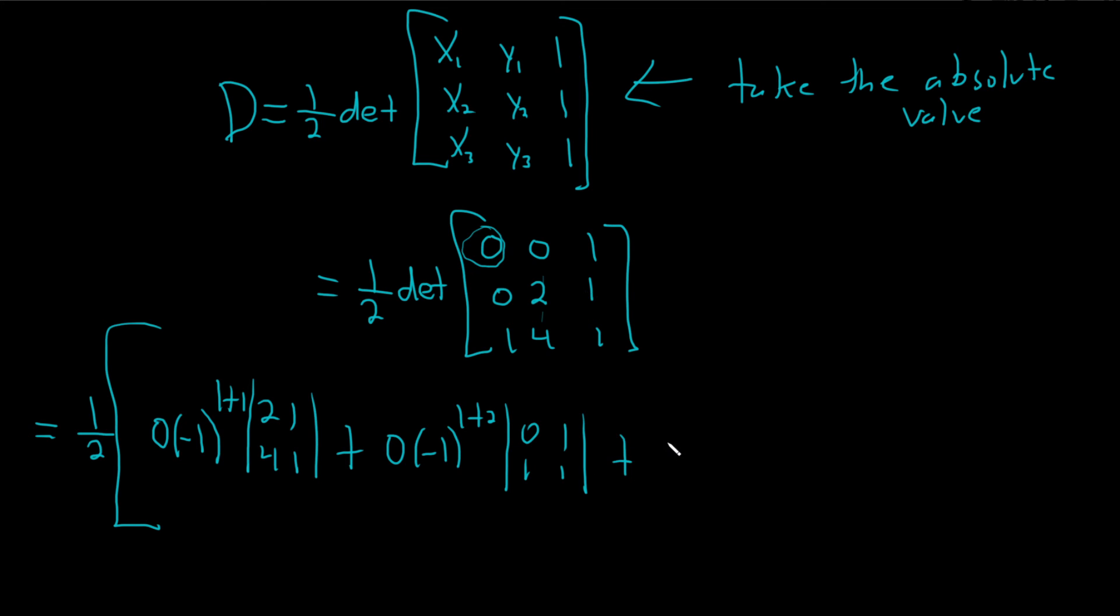Plus the last number, which is 1, negative 1, and then again, row plus column, so first row, third column, so 1 plus 3, and then cross this out, cross this out, we have 0, 2, 1, 4.